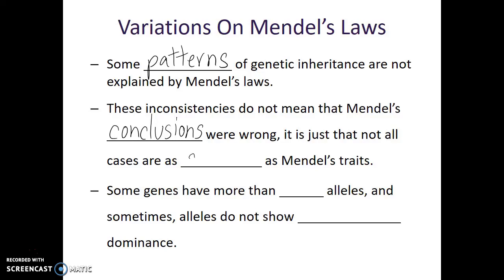For example, some genes have more than two possible alleles. Keep in mind each individual will only have two alleles, but what if there are more than two options? Well, then individuals can have different combinations of alleles.